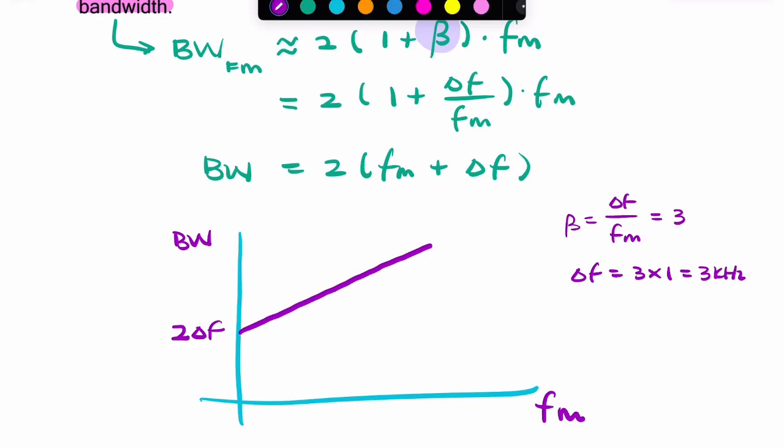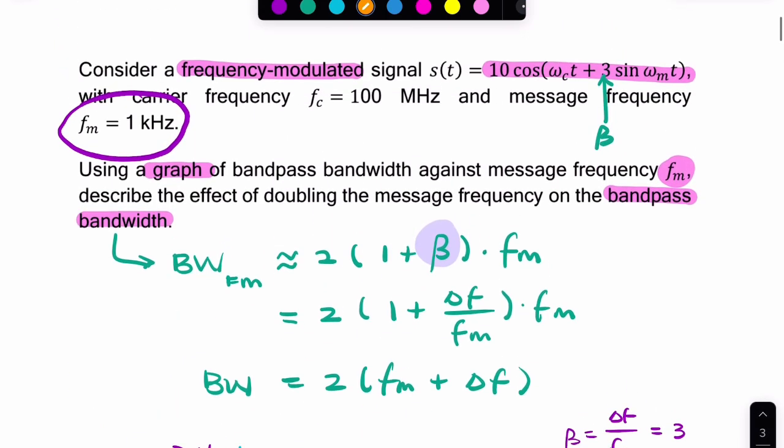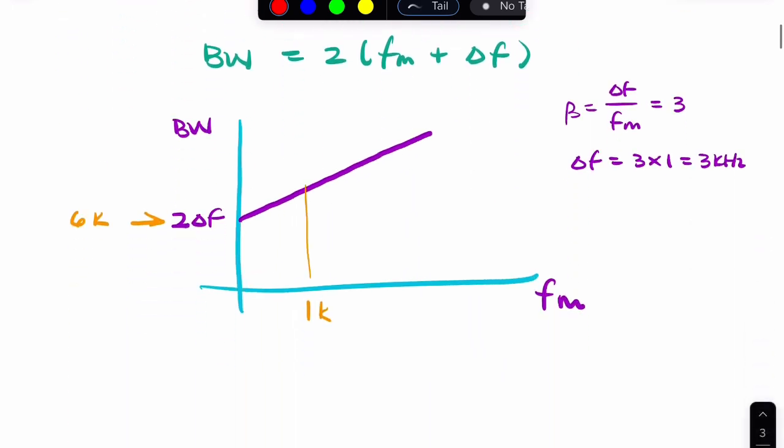So that allows us to replace this with 6 kilohertz. And fm is 1 kilohertz, and the question is asking about the effect of doubling fm. So what would be the effect of doubling it to 2 kilohertz?